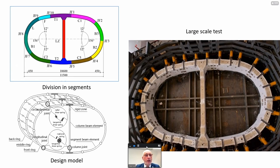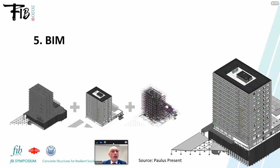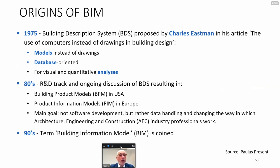The next topic is BIM. The origins of BIM go back to 1975, where a building descriptive system was proposed by Charles Eastman, consisting of models instead of drawings, with a database-oriented approach for visual and quantitative analysis. In the 1980s, R&D resulted in building product models and production information models (PIM). The main goal was not to develop software but rather data handling and changing the way architecture, engineering, and construction — the AEC industry — professionals work. In the 1990s, the term 'building information model' was coined.